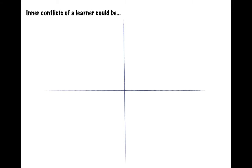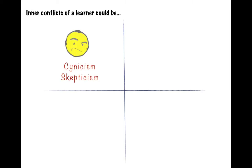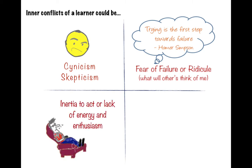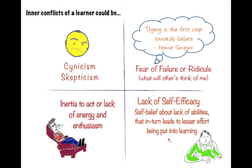As a learner facilitator, when you are profiling your learners, you may also want to consider what type of inner conflicts your learners may be facing. Typical inner conflicts that hinder learners going from where they are to where they could be include cynicism and skepticism, fear of failure or ridicule, inertia to act or lack of enthusiasm, and lack of self-efficacy.